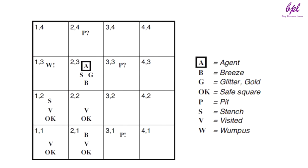The agent has now proved that there is neither a pit nor a Wumpus in 2,2, so it is OK to move there. The agent moves to 2,2 and then to 2,3, where it detects a glitter, so it should grab the gold and then return home. Note that in each case where the agent draws a conclusion from the available information, that conclusion is guaranteed to be correct if the available information is correct — this is a fundamental property of logical reasoning.